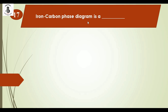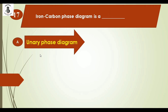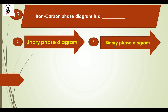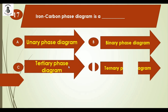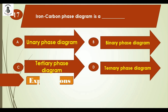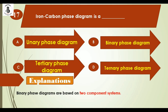Question 17: The iron-carbon phase diagram is — Option A: unary phase diagram, Option B: binary phase diagram, Option C: tertiary phase diagram, Option D: ternary phase diagram. Binary phase diagrams are based on two-component systems. The iron-carbon diagram depends on the presence of carbon in iron — two components — so it is a binary phase diagram.